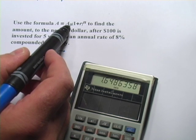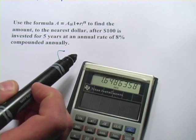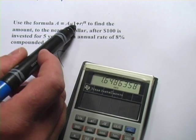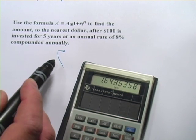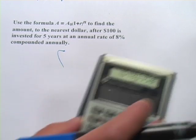The A sub 0 is the amount of money you start with. If the R is your interest rate, then make sure you convert it to a decimal first. And the N is the number of years that go by. So let me rewrite this formula.